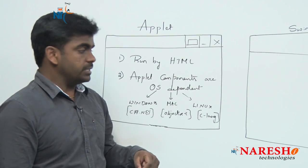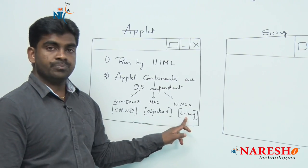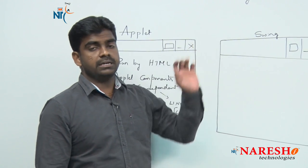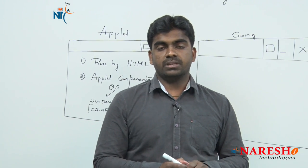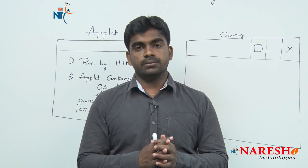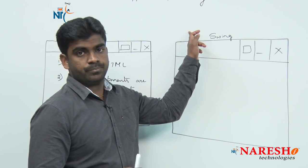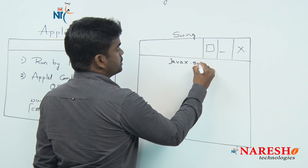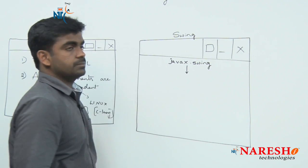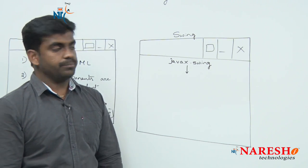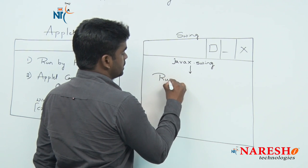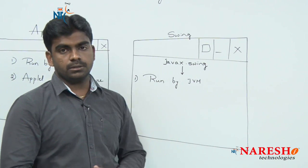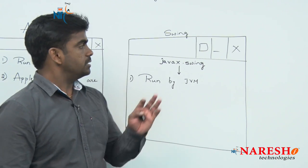So Java language is internally depending on other languages to create the components of Applet — this is the main disadvantage. But Swing components are completely developed using Java, nothing but pure Java standalone applications. Swing applications run by JVM only — no need to depend on another technology. With the help of the JIT interpreter, JVM only runs those Swing applications.